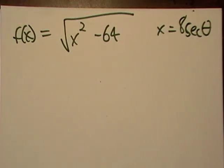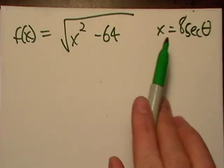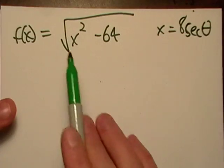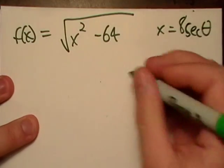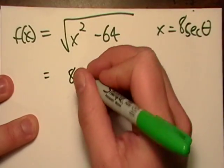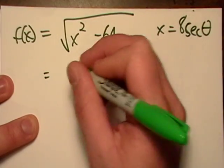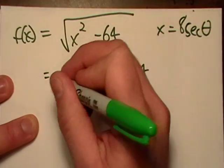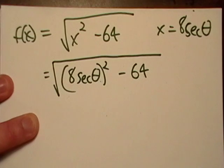Okay, it says simplify this expression as far as possible with x being equal to 8 secant. So let's go ahead and just do that. Let's just plug x in, so we get 8 secant theta squared minus 64, all under the radical.